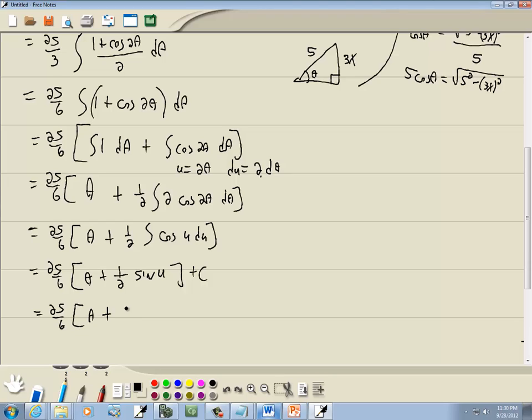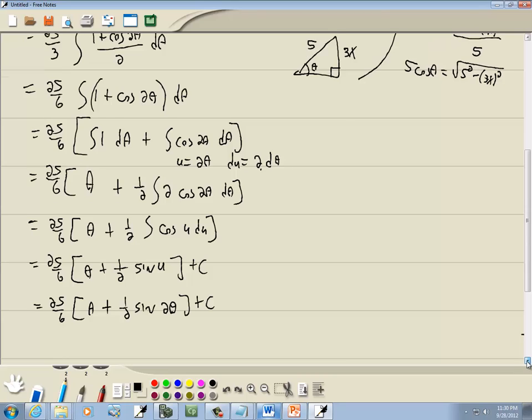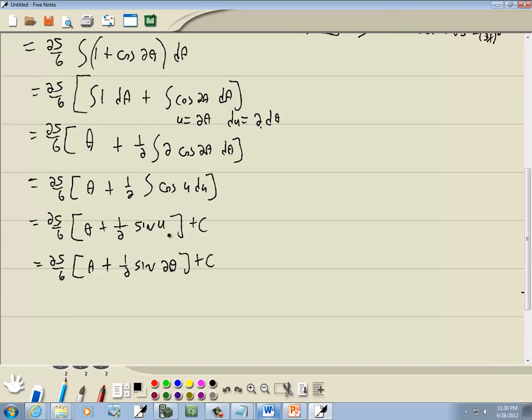So then we got theta plus 1 half, and u was 2 theta. Now the problem with that is I don't have sine of 2 theta, but we got an identity that says sine 2 theta is equal to 2 sine theta cosine theta. So this becomes 25 over 6 theta plus the 1 half times 2 cancels, and we got sine theta cosine theta.